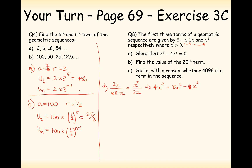Cross multiplying gives us 4x squared equals x cubed. Rearranging, we get x cubed minus 4x squared equals 0.